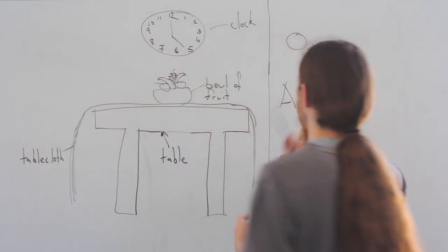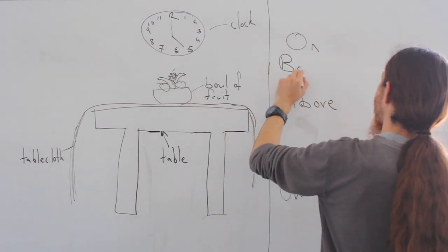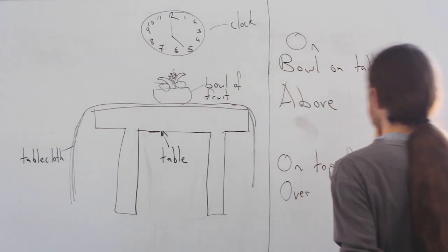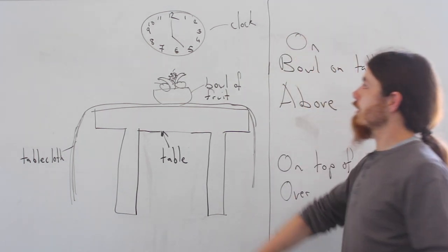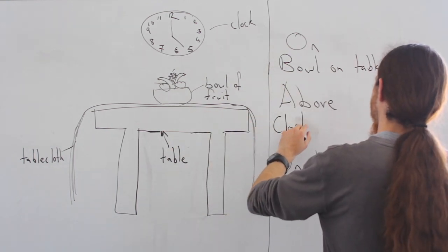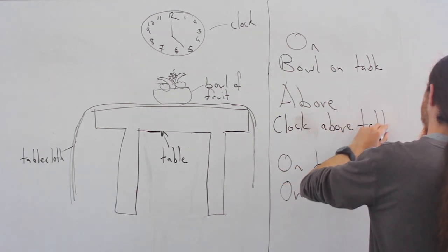So with on, we would say that this bowl of fruit is on the table. So, bowl on table. Above, we would say that this clock is above the table. So, clock above table.